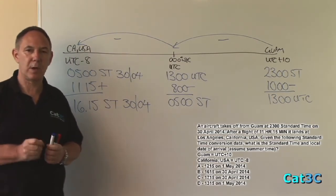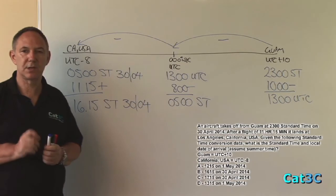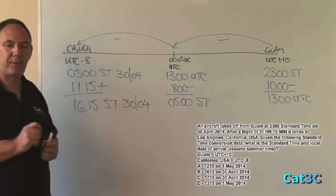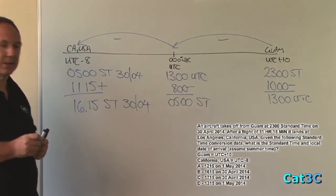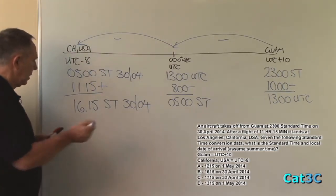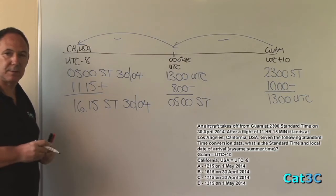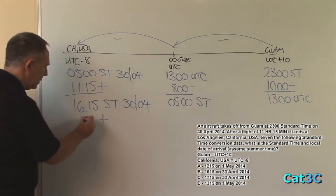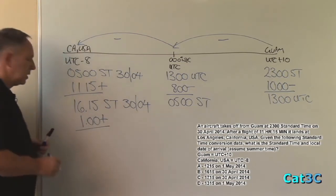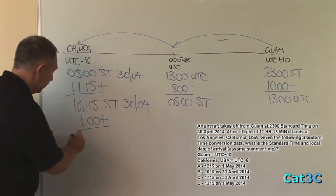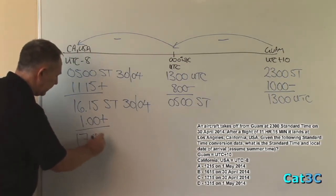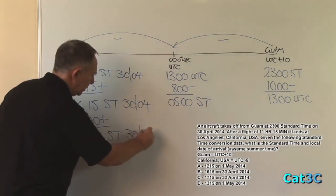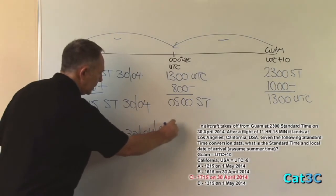But remember that the question states: assume summer time. And summer time is always one hour fast on the local standard time given. So all you do if it says assume summer time is add one hour to the final calculation. So my final answer will be 1715 standard time on the 30th of April 2014.